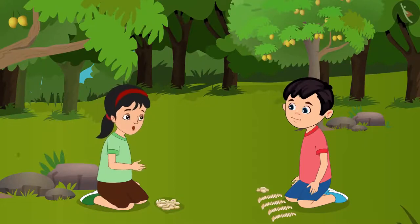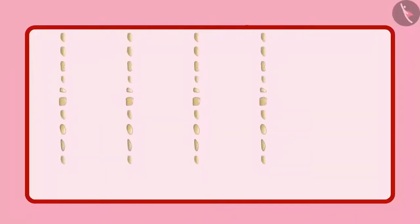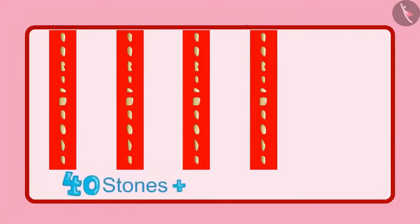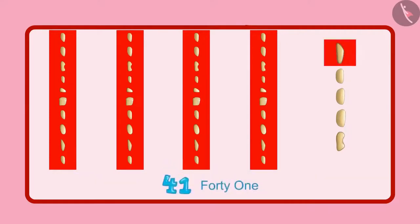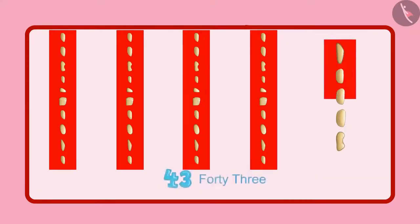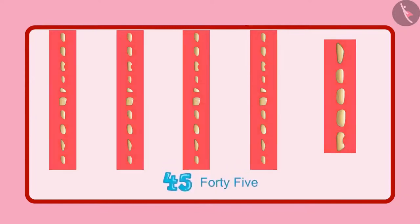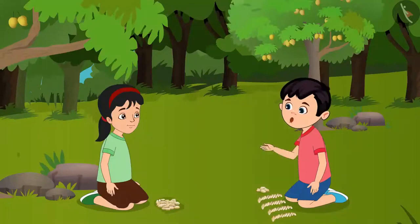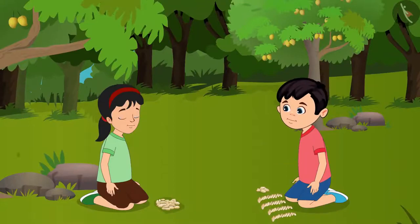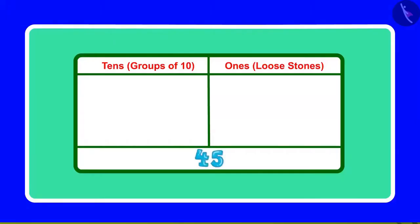Alright Chotu, now let us count them too. First we had 40 stones, and now there are 5 more stones. So they are 41, 42, 43, 44, 45. This means you collected 45 stones. Pinky, can you tell me how many groups of 10 and how many single units are there in 45? Yes Chotu — 45 has 4 groups of 10 and 5 single units. You are absolutely right.